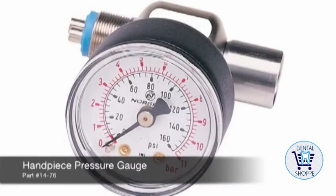In order to verify the pressure that is really coming through the hand piece hose, we suggest using a hand piece pressure gauge. You would use this device to set the correct pressure at your block.